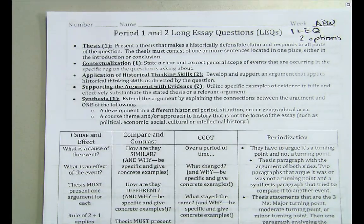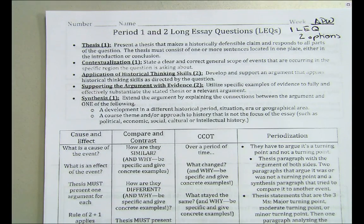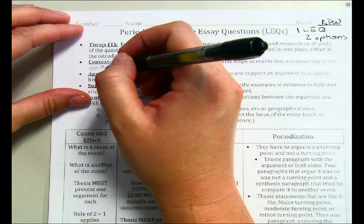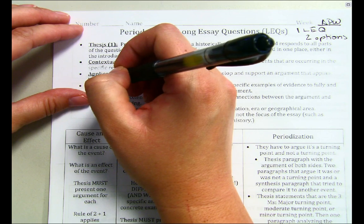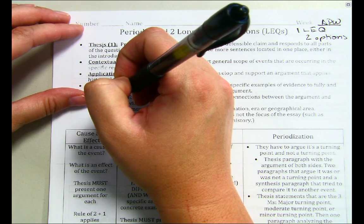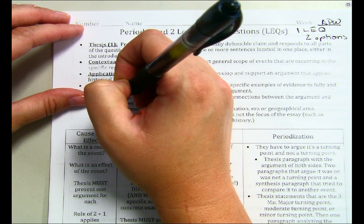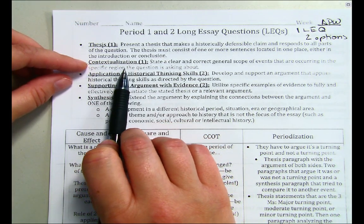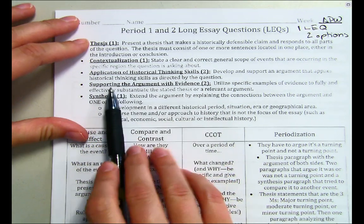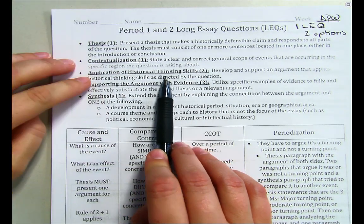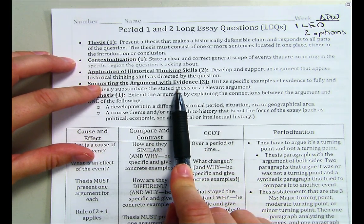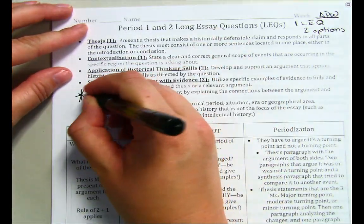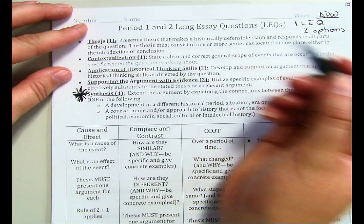When we talk about long essay questions, the foundations are right here. You need to write a thesis—it's telling you exactly what you're going to be discussing in the entire essay. Then you have contextualization: what is happening in the world at that time. Then you develop your argument, provide two pieces of evidence, and then you have your synthesis. Guess what's the hardest part? The synthesis.